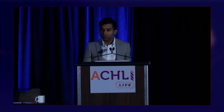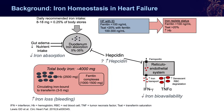Even if iron stores are adequate, because of this hepcidin-induced block, the body is unable to actually utilize iron. In the ideal scenario, iron intake of about 8 to 18 milligrams is absorbed duodenally and the body functions normally. But beyond decreased absorption and intake, decreased bioavailability — mediated through the inflammatory cascade in heart failure — is equally or more important.